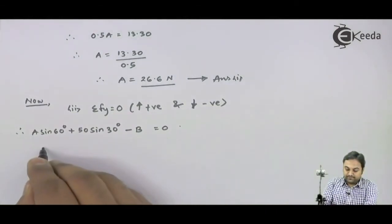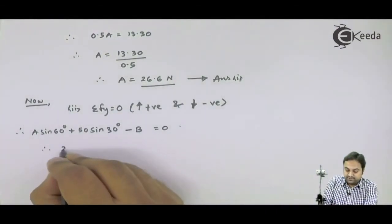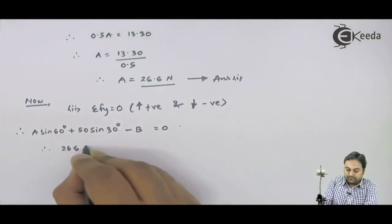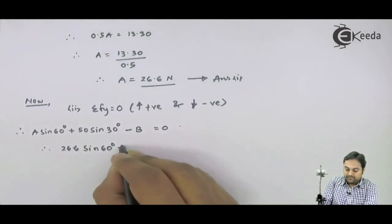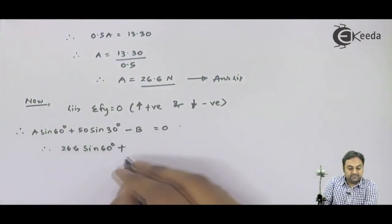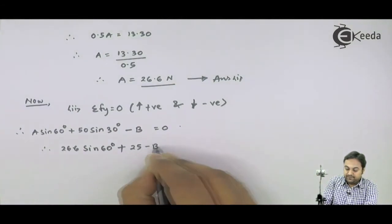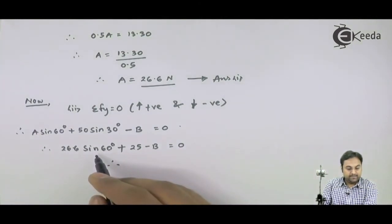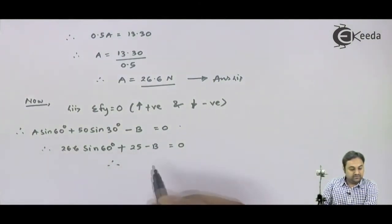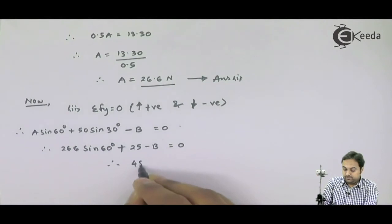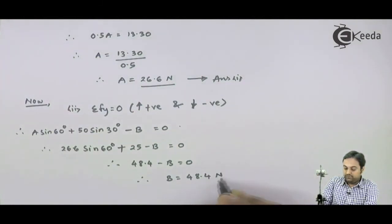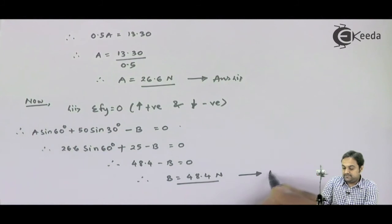Instead of A I will write down 26.6. Sin 60 plus 50 sin 30 - that comes out to be 25 - minus B is equal to 0. Therefore, 26.6 sin 60 plus 25, the answer is 48.4 minus B is equal to 0. And therefore, B is equal to 48.4 Newton. That is my second answer.